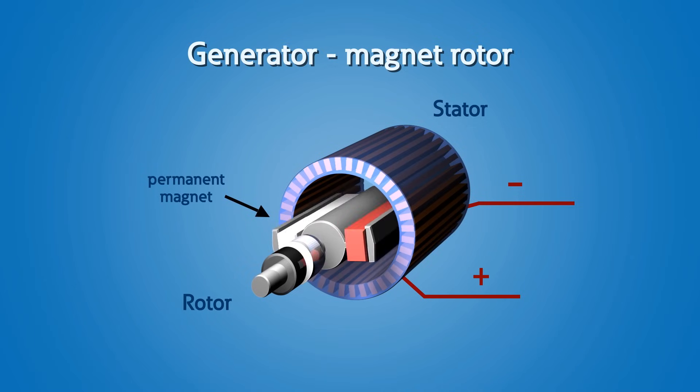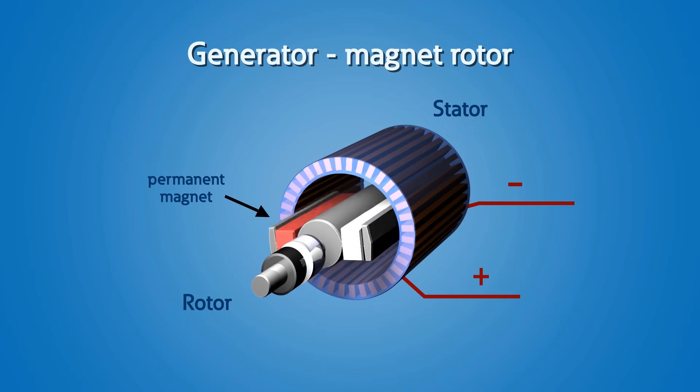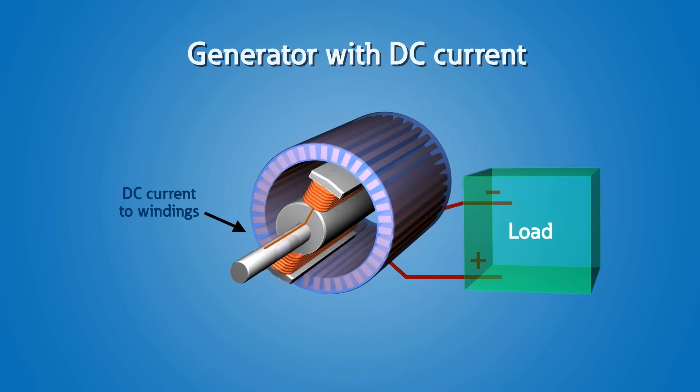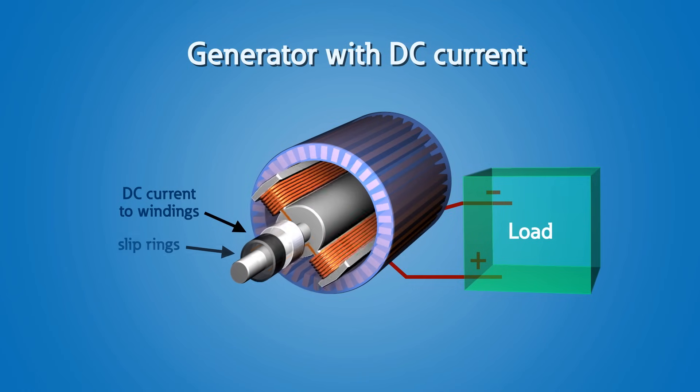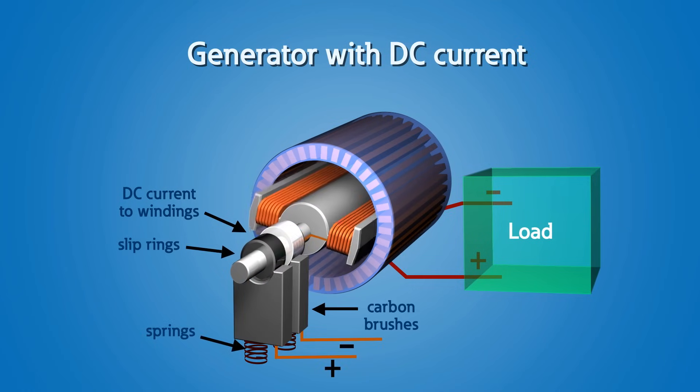The rotor spins inside the stator, and one full rotation is equal to a complete cycle of power. In North America, this equates to one 60 Hertz cycle. For a generator to produce power, electromagnetic induction must occur between the field windings in the rotor and the armature windings in the stator. A magnetic field must be created in the field windings on the rotor. Traditionally, this was done using permanent magnets, but with larger scale generation being needed, electromagnetic field coils were able to produce substantially more power.